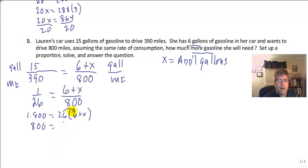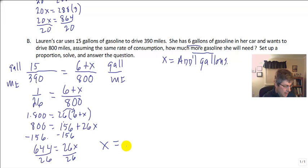So if I distribute the 26, I get 156 plus 26x. That's 800 equals 156 plus 26x, so 644 equals 26x. Divide by 26. And then I find out that x equals 24.76 gallons of gas.